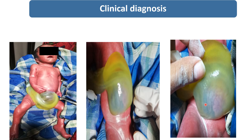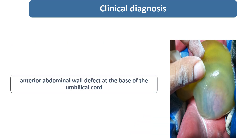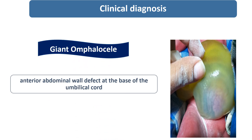So whenever a newborn is having an anterior abdominal wall defect at the base of the umbilical cord, what will be the clinical diagnosis? This looks like a midline abdominal mass at the umbilical cord which is covered with a membrane, but this is a wall defect. So the diagnosis for this condition will be omphalocele, and according to the size and according to the herniated content, we have to categorize it as either small omphalocele or large or giant omphalocele.